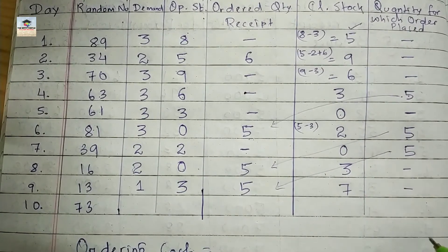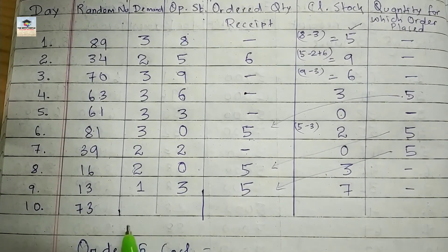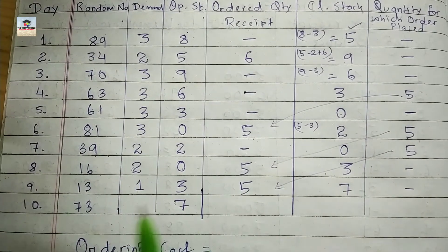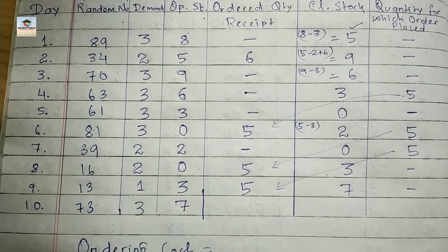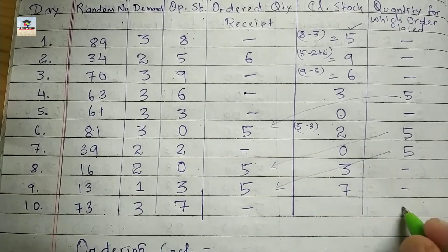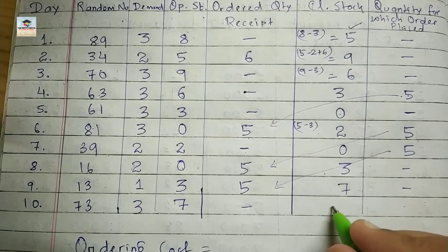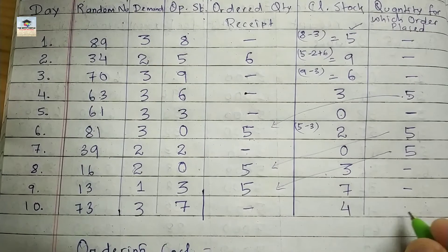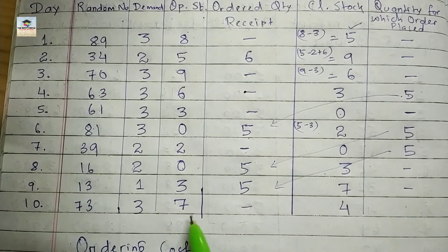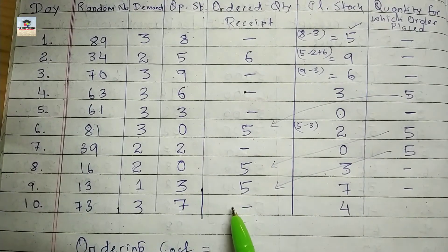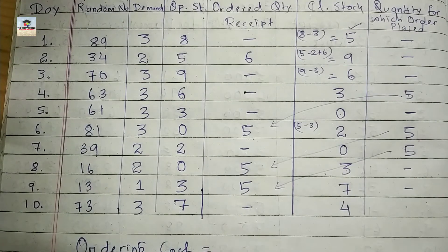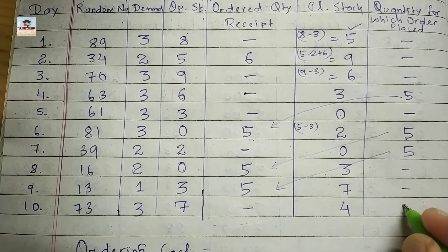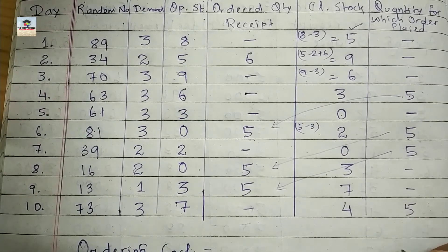Day nine: opening stock is three, random number 13 falls in the 05–14 range, so demand is one. Five books are received. Closing stock is three minus one plus five, which is seven. Day ten: opening stock is seven, demand is three, closing stock is seven minus three, which is four. Opening stock plus order outstanding is less than eight, so another order of five books is placed.